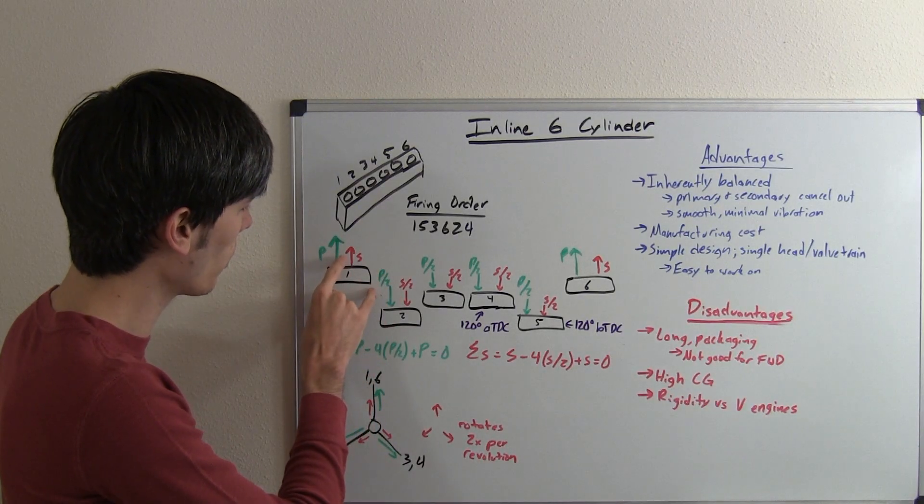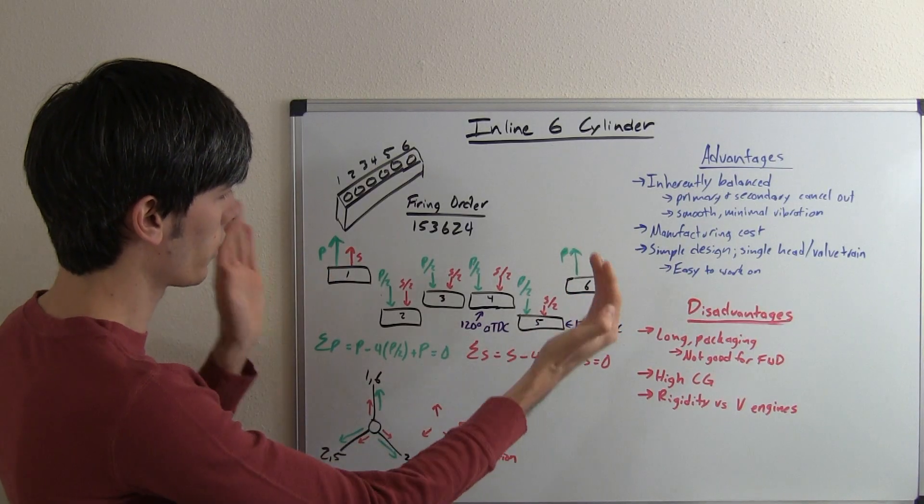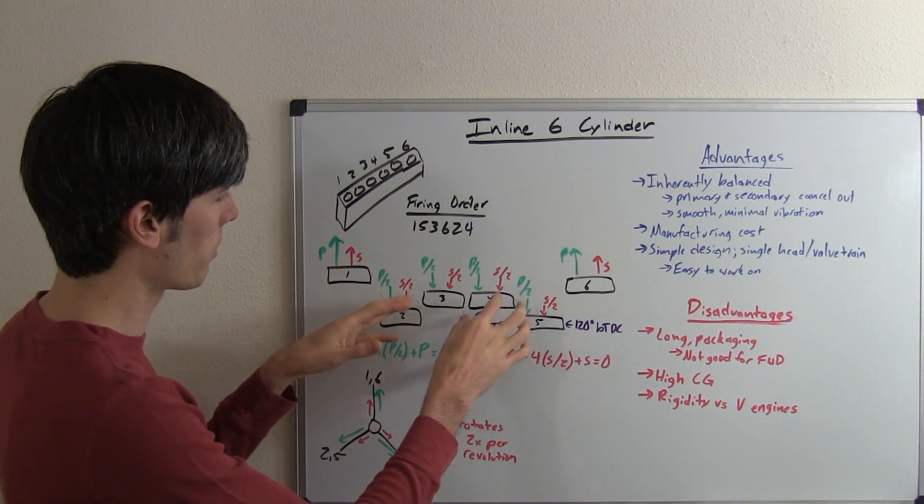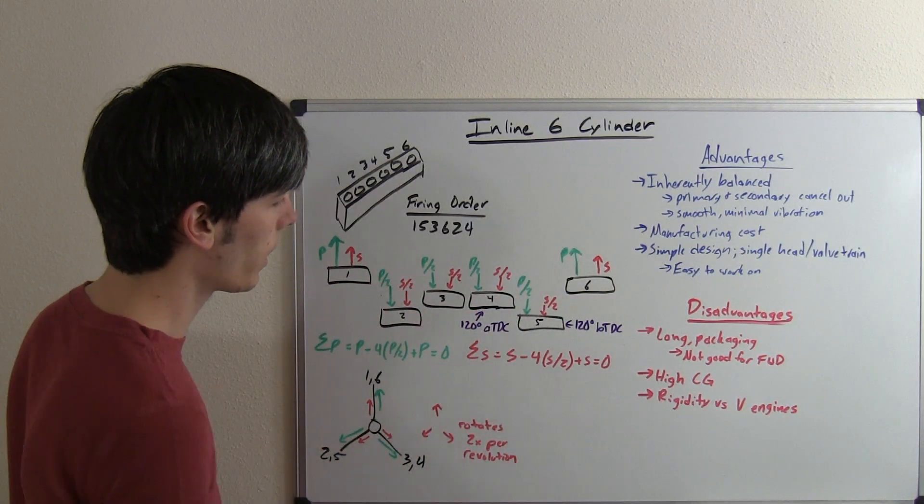So basically what we've got is your secondary forces on these one and six cylinders is going to be full in the upward direction, and it's going to be about half of that downward for all the rest of the cylinders. So when you add that up, it's going to equal zero.